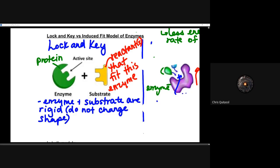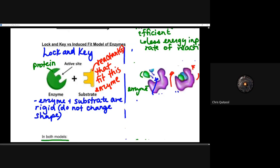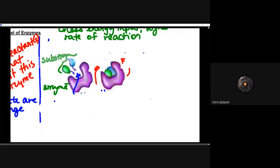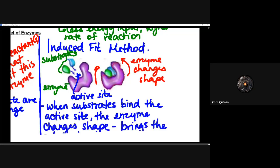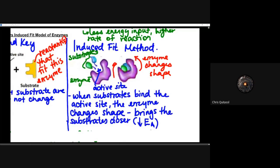The induced fit model is a bit different. When the substrate binds to the active site, the enzyme can change its shape, which brings the substrate closer and reduces the activation energy — kind of like giving it a hug. Think of the induced fit model as wrapping around the substrate, bringing activation energy down, and it can fit multiple different substrates regardless of their exact shape.